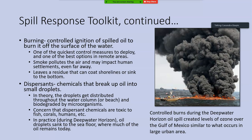Dispersants are chemicals that break up oil into small droplets. They essentially turn the oil into smaller, bite-sized pieces that microbes can get at — the droplets get distributed throughout the water column, providing lots of surface area for microorganisms to attach and break down the oil. However, there is concern that dispersants, because they are chemicals, are toxic to fish, corals, humans, and other organisms — and we'll see that this concern was likely well-founded.